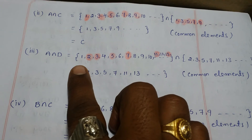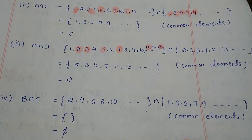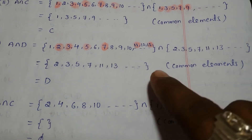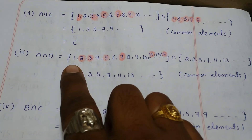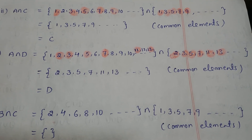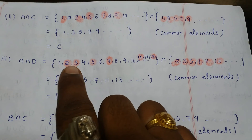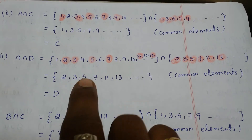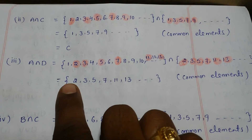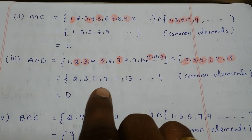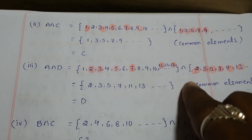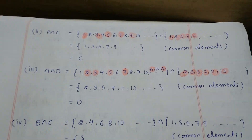Next, A intersection D. The elements of A are all natural numbers and the elements of D are the prime numbers. The common elements are 2, 3, 5, 7, 11, 13, and so on — that is nothing but the set of prime numbers, which is set D itself.